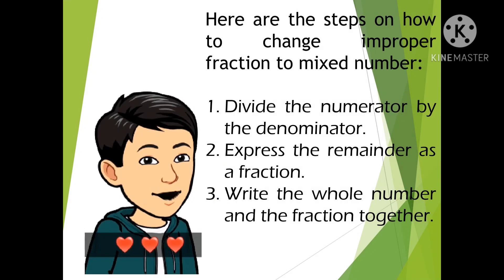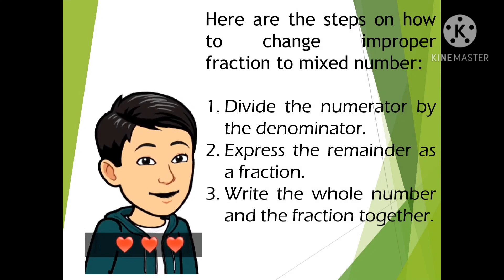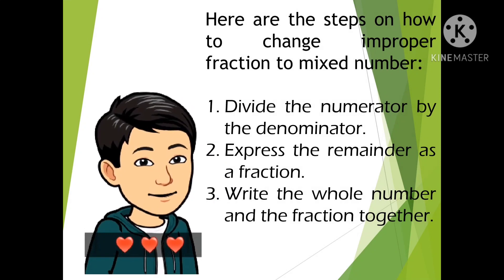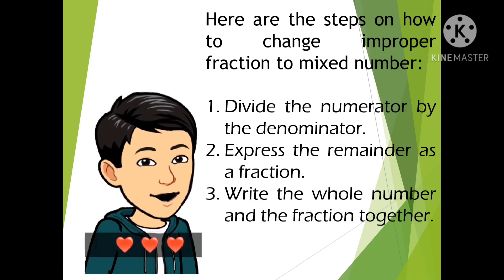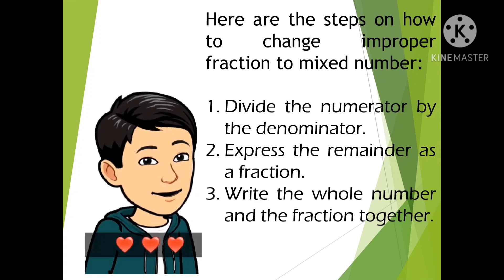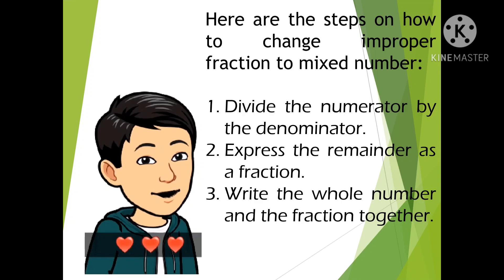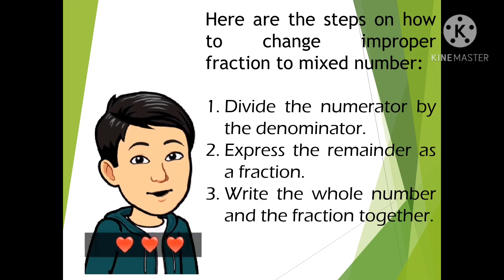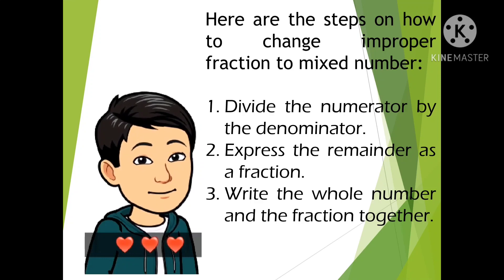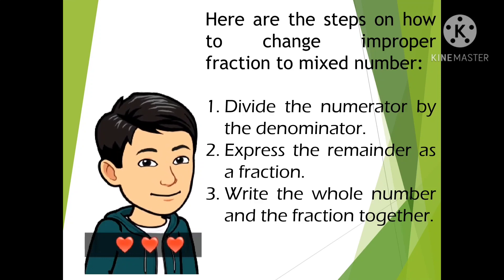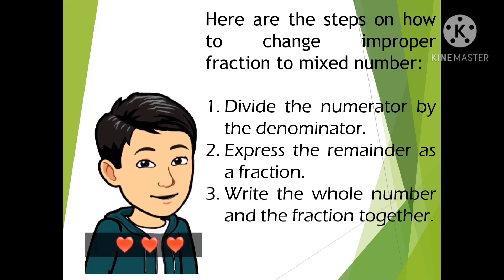Here are the steps on how to change an improper fraction to a mixed number. Step 1: Divide the numerator by the denominator. Step 2: Express the remainder as a fraction. Step 3: Write the whole number and the fraction together.